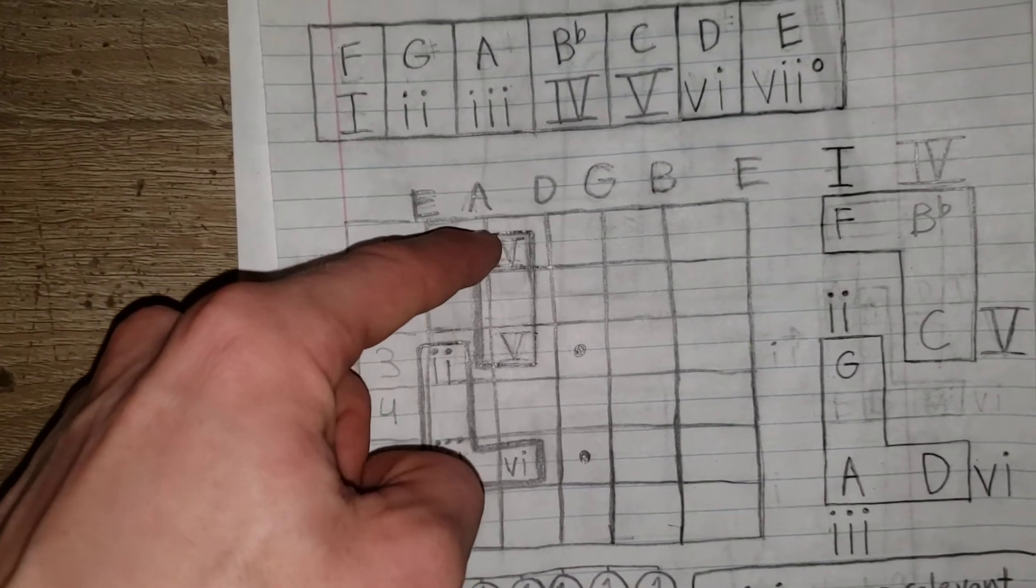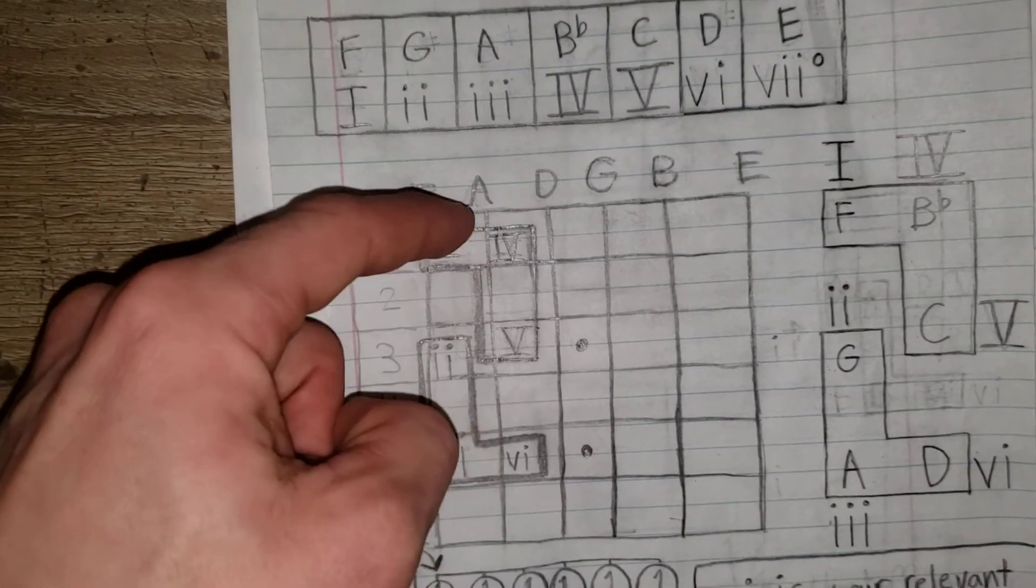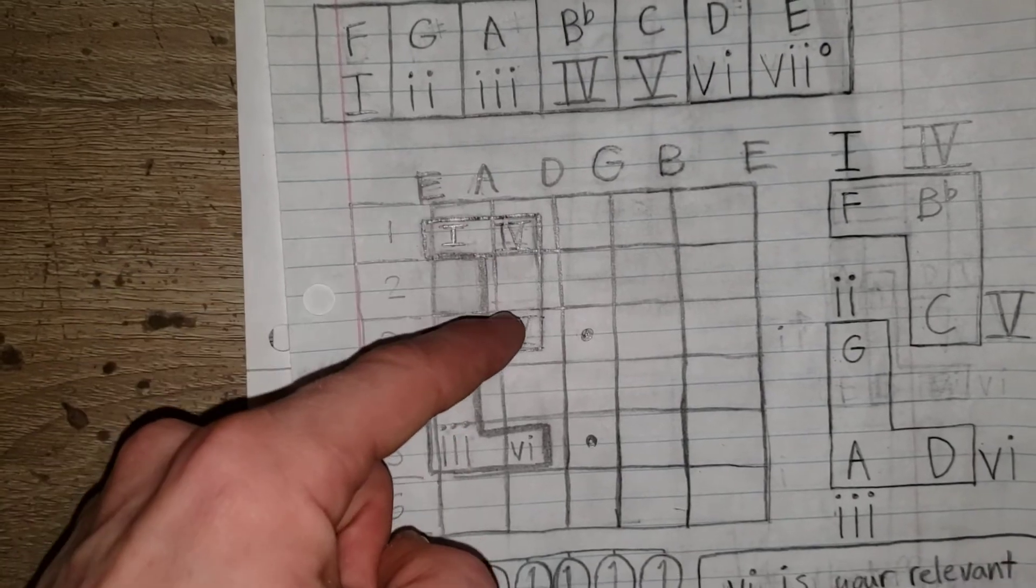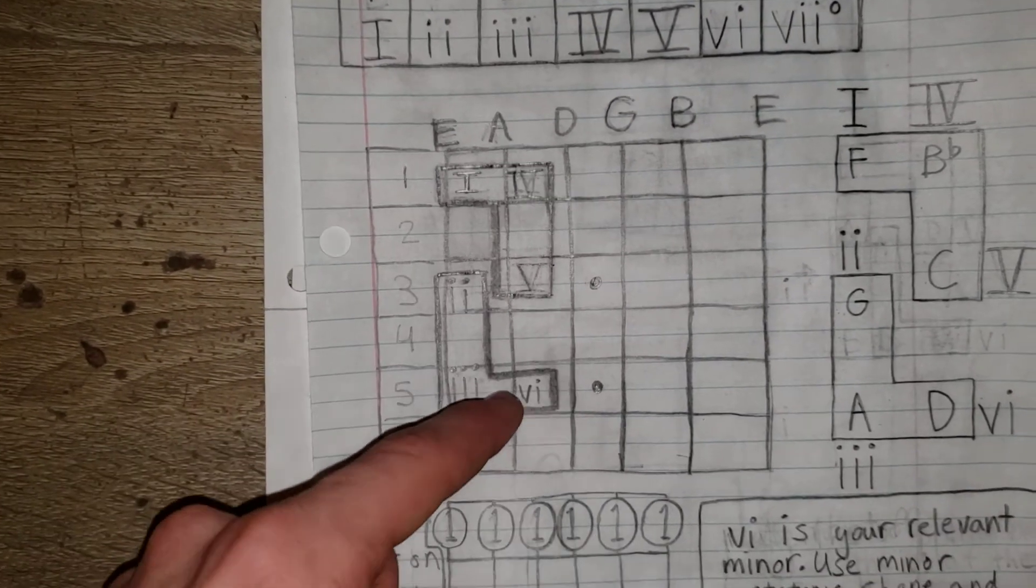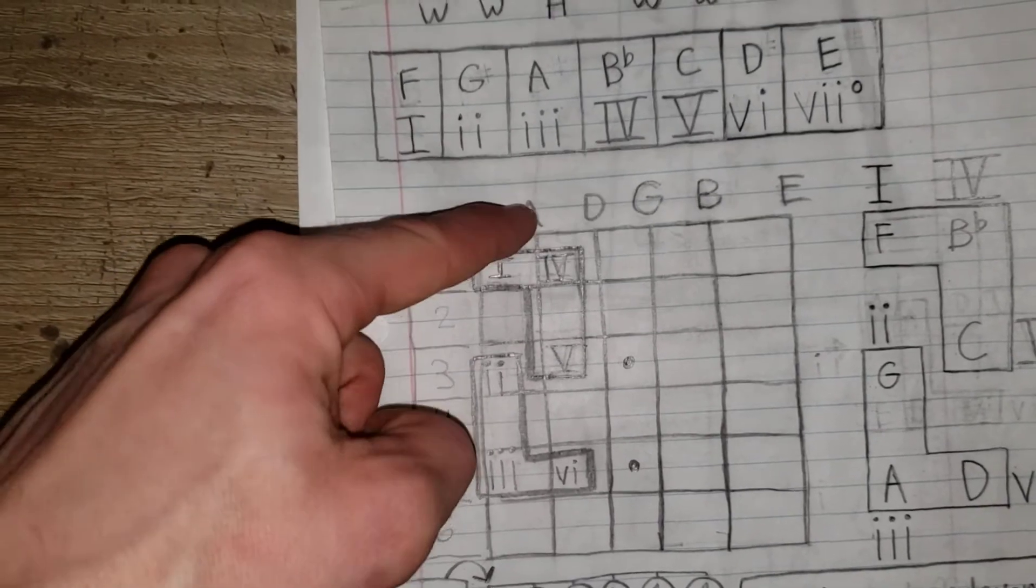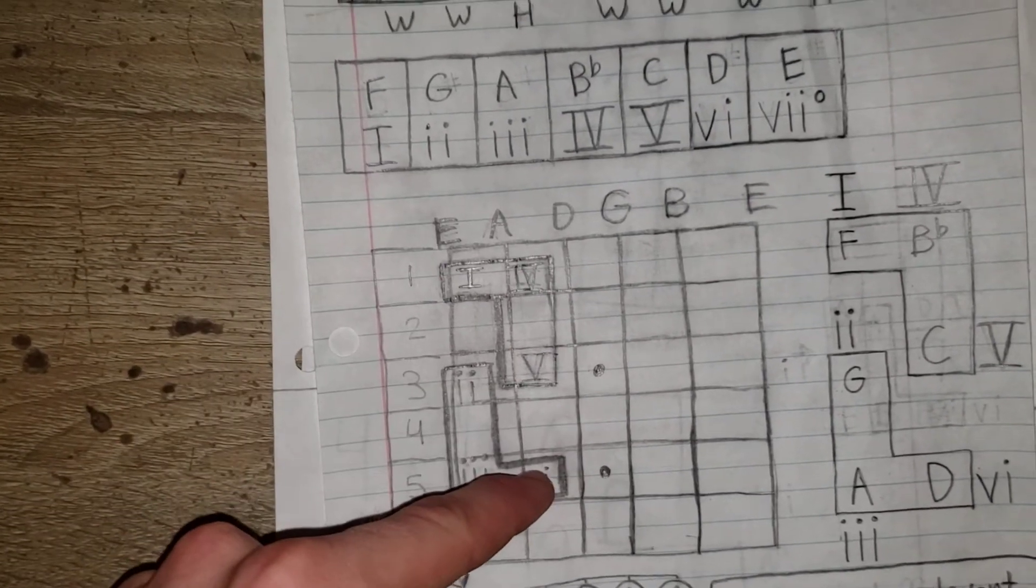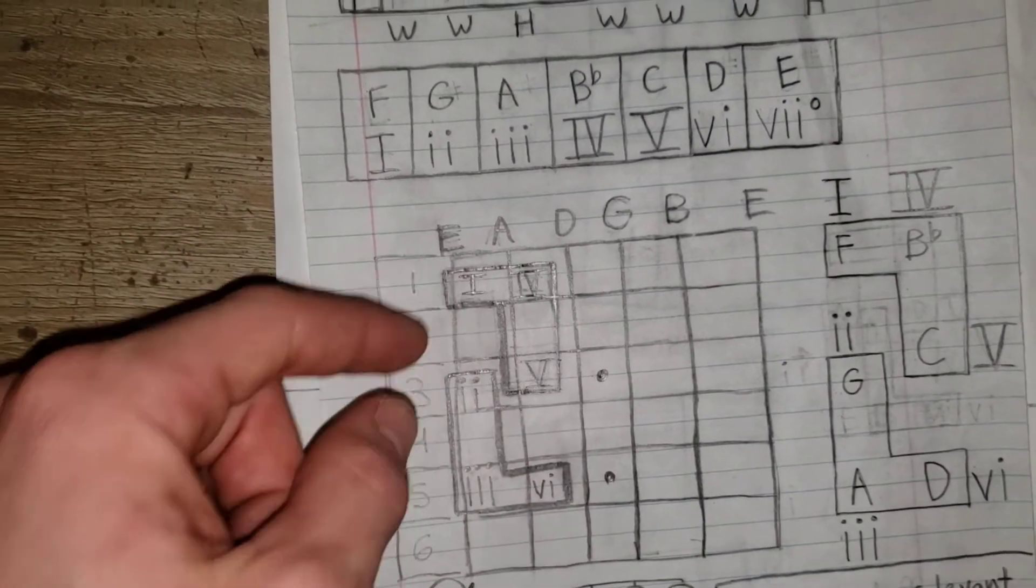We're going to go one string over. We're going to go on the first fret, 4. Third fret, 5. Fifth fret, 6. So 1, 2, 3, 4, 5, 6. It just skips that string, you see.